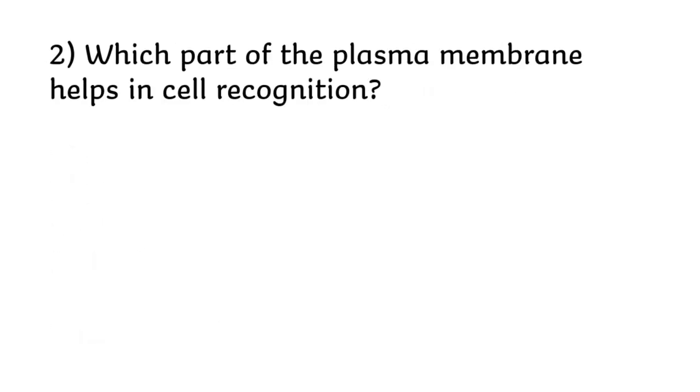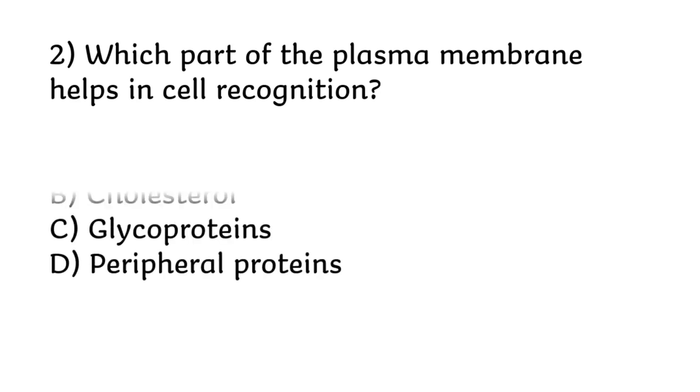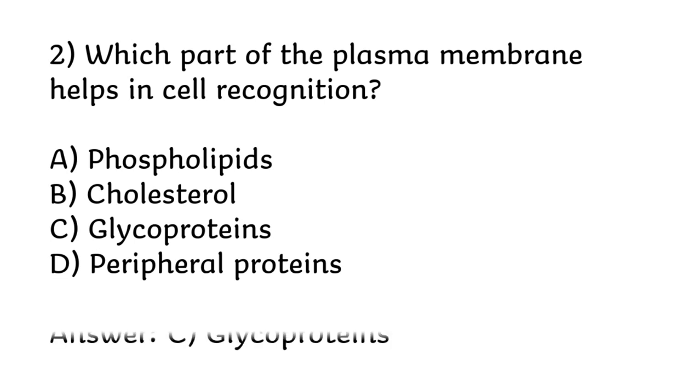Which part of the plasma membrane helps in cell recognition? Phospholipids, cholesterol, glycoproteins, or peripheral proteins. Correct answer is option C, glycoproteins.